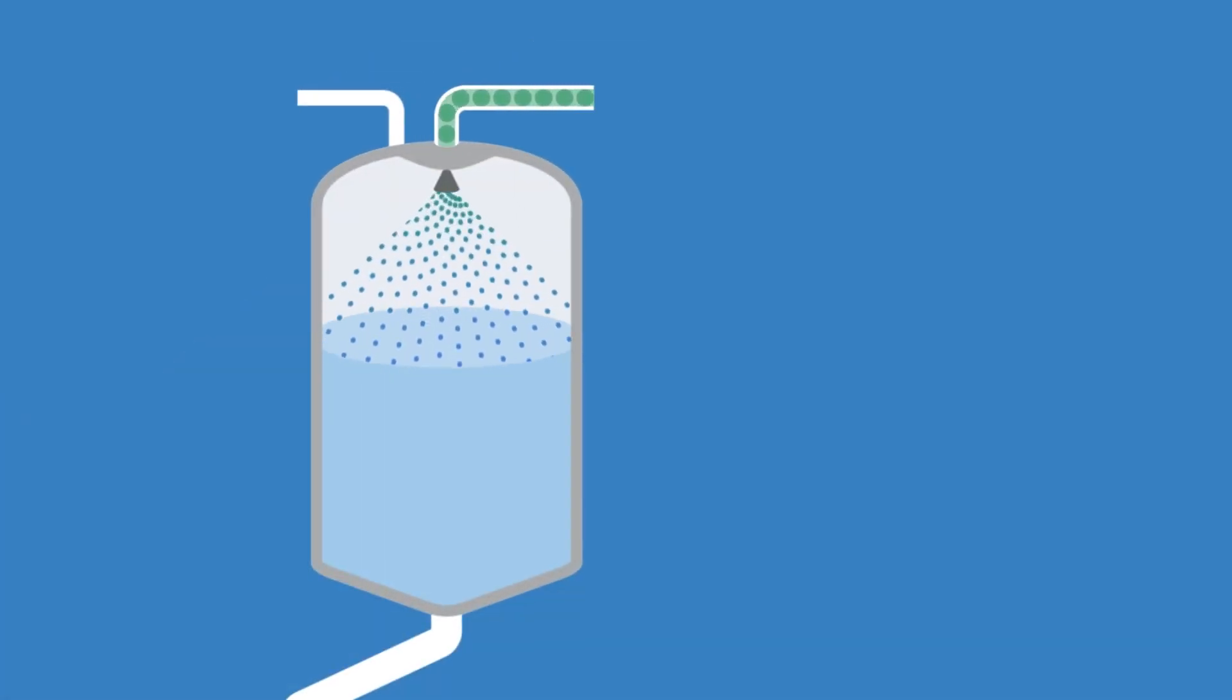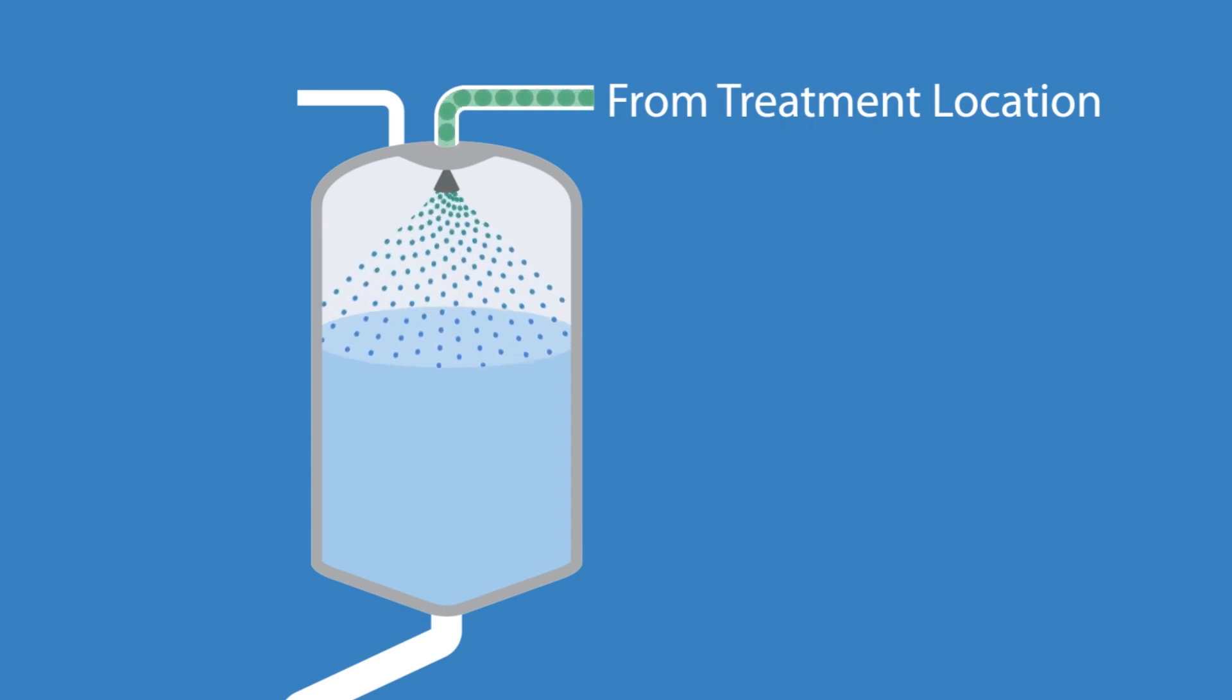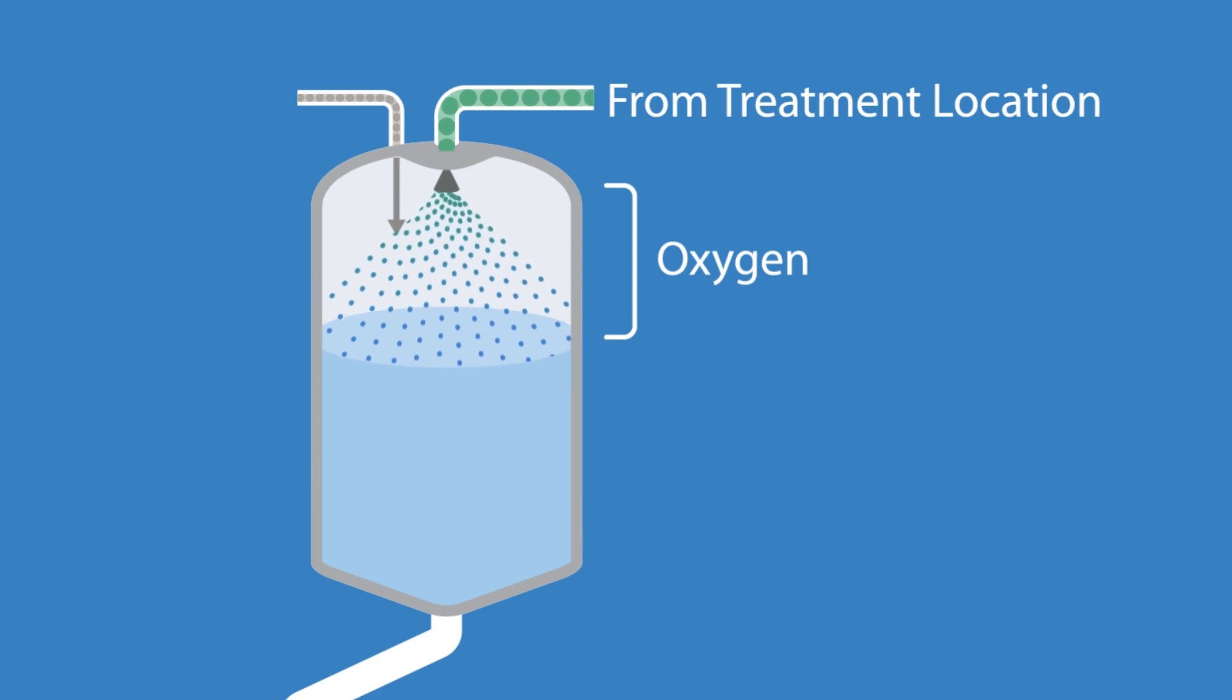First, SDOX draws water from the bulk flow using a small side stream, delivering it to the pressure vessel's headspace while simultaneously injecting oxygen into the pressurized saturation chamber.